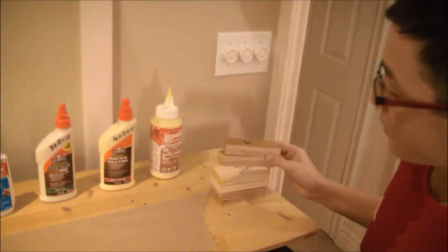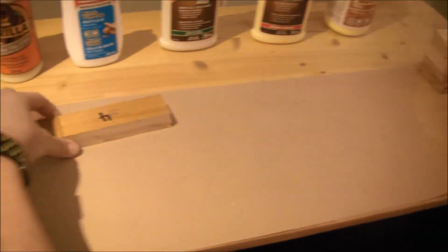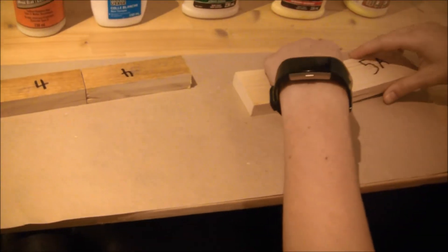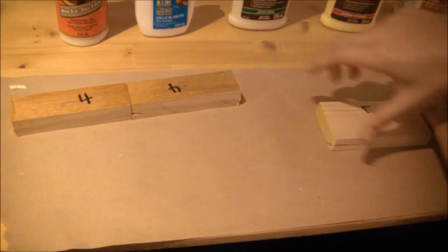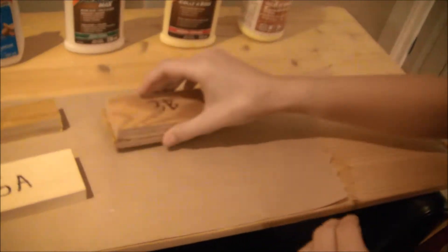So we made up the samples by getting two pieces of wood that are labeled. We made sure to label all of them. This is maple, a hardwood. This is pine, a softwood. And this is just plywood.